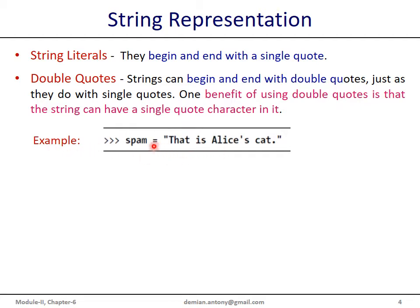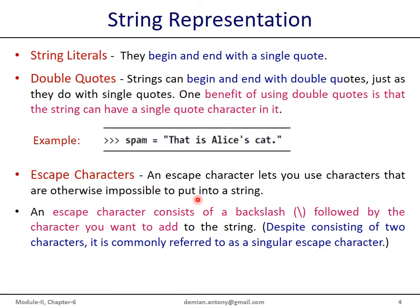Here is an example — we can see a single quote used within a double quote. If we use a single quote to represent a string containing a single quote, then this results in an error. In Python, we have a number of escape characters which are used to represent characters that are impossible to put directly into a string. An escape sequence consists of a backslash followed by the character we want to add to the string.